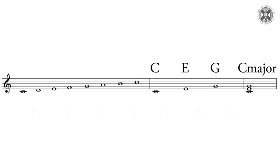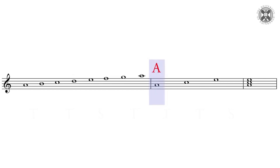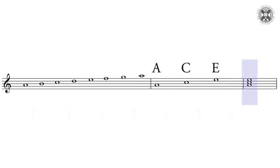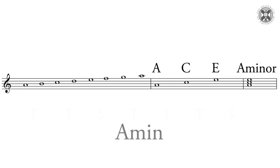Going to the A natural minor scale, we'll do the same trick — we'll isolate the three notes of the A minor triad: A, C, and E. We stack them up vertically to show the A minor triad. On a lead sheet this could be shown as 'A min', short for minor, 'A' with a little 'm', or 'A' with a minus sign, which you'll find in jazz.